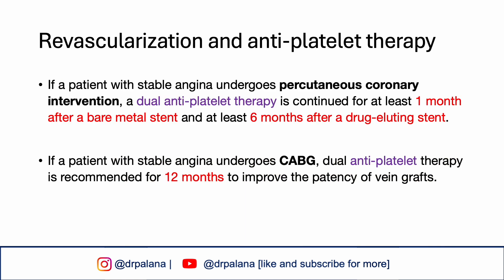If a patient with stable angina undergoes percutaneous coronary intervention, dual antiplatelet therapy is continued for at least one month after a bare metal stent and at least six months after a drug-eluting stent. If the patient with stable angina undergoes CABG, dual antiplatelet therapy is recommended for 12 months to improve the patency of the vein grafts.